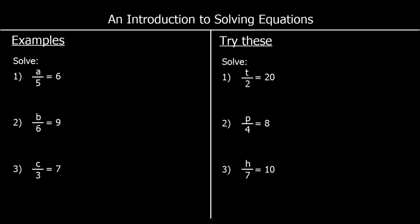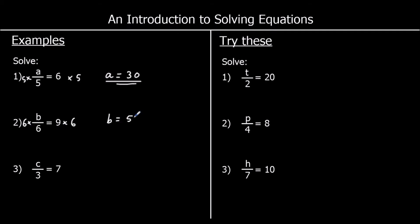This time we have divisions. The first question says a divided by 5 equals 6. The opposite of dividing is timesing, so to get a by itself I'm going to multiply both sides by 5. And a is equal to 6 times 5, which is 30. For question 2, b divided by 6 equals 9. So I'm going to multiply both sides by 6, which will get b by itself. And b is 9 times 6, which is 54. And for the third one, c divided by 3 equals 7. So if I multiply both sides by 3, I'll get c equals 21.